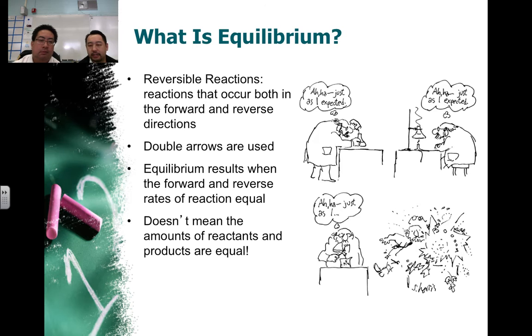And because the reaction can go forwards and backwards, there's a dynamic shifting in both directions towards product and reactant that occurs. This doesn't necessarily mean that the reactants and products are in equal concentrations or amounts. It just means that the rate of the reaction forwards and backwards is the same.